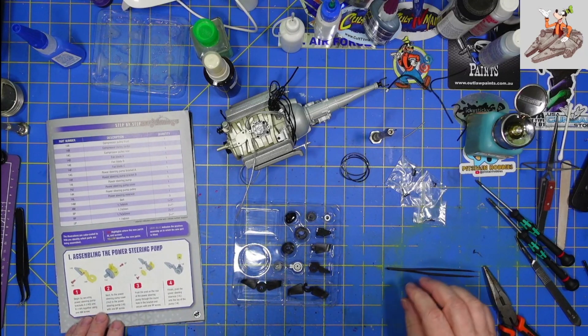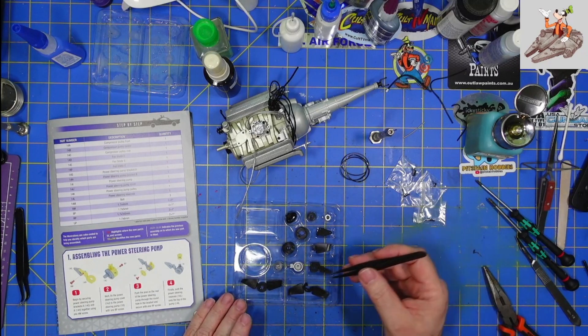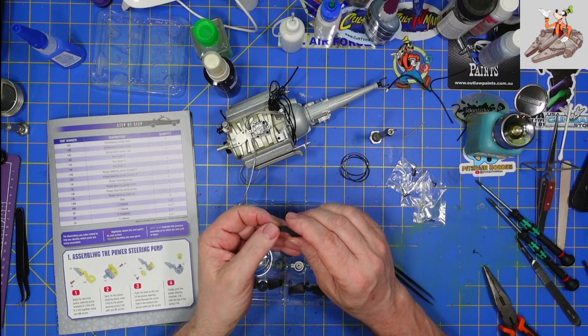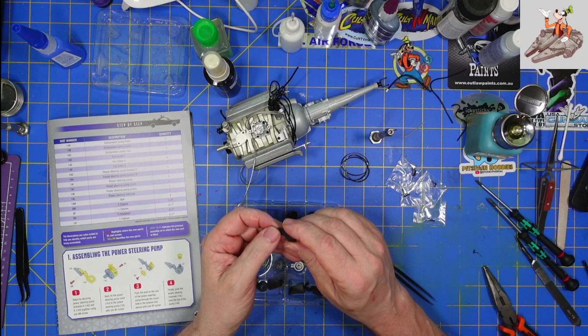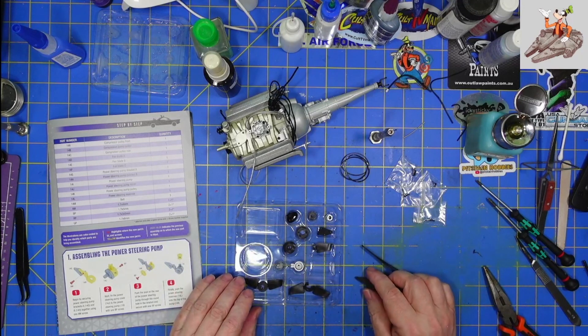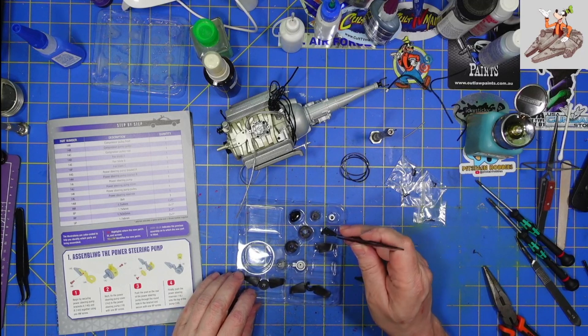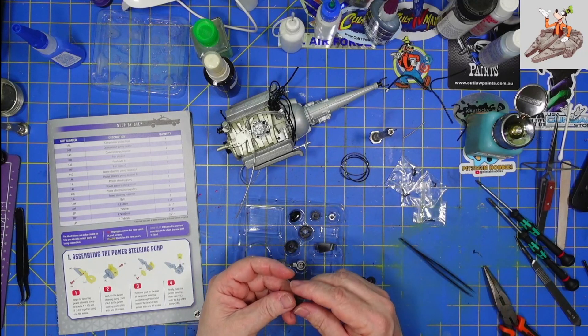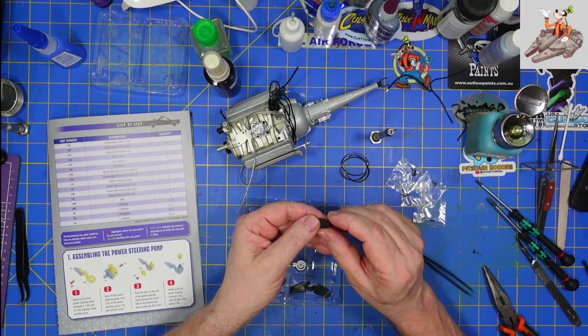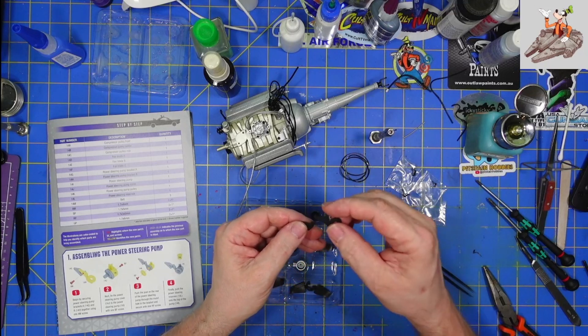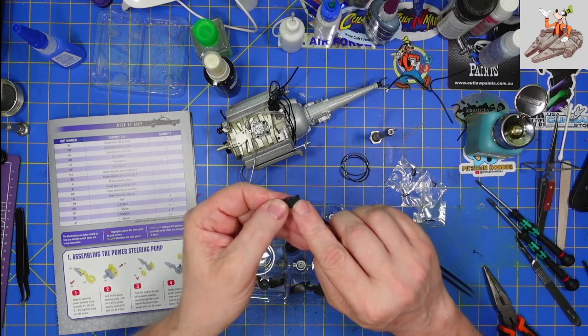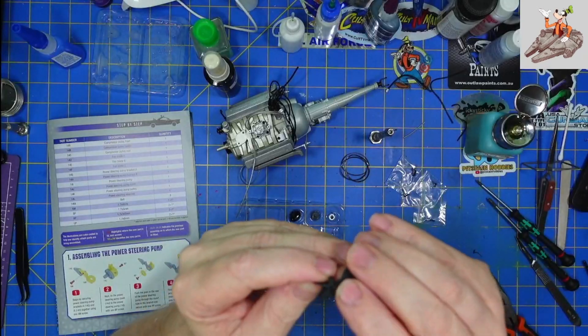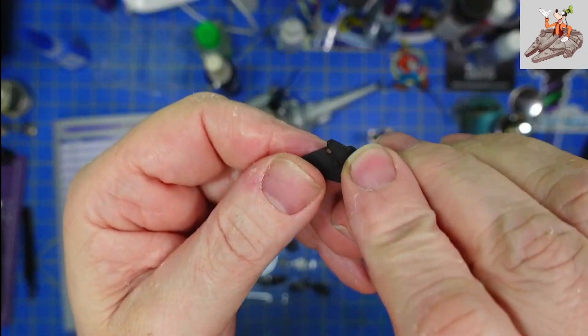So the first thing it does is secure the power steering pump brackets 14G and H together using an AM screw. This, I believe, is going to be, doesn't feel like metal. But yeah, this should be the part that goes in the back here. Got a hole here, a hole here. This is going to go across like that.